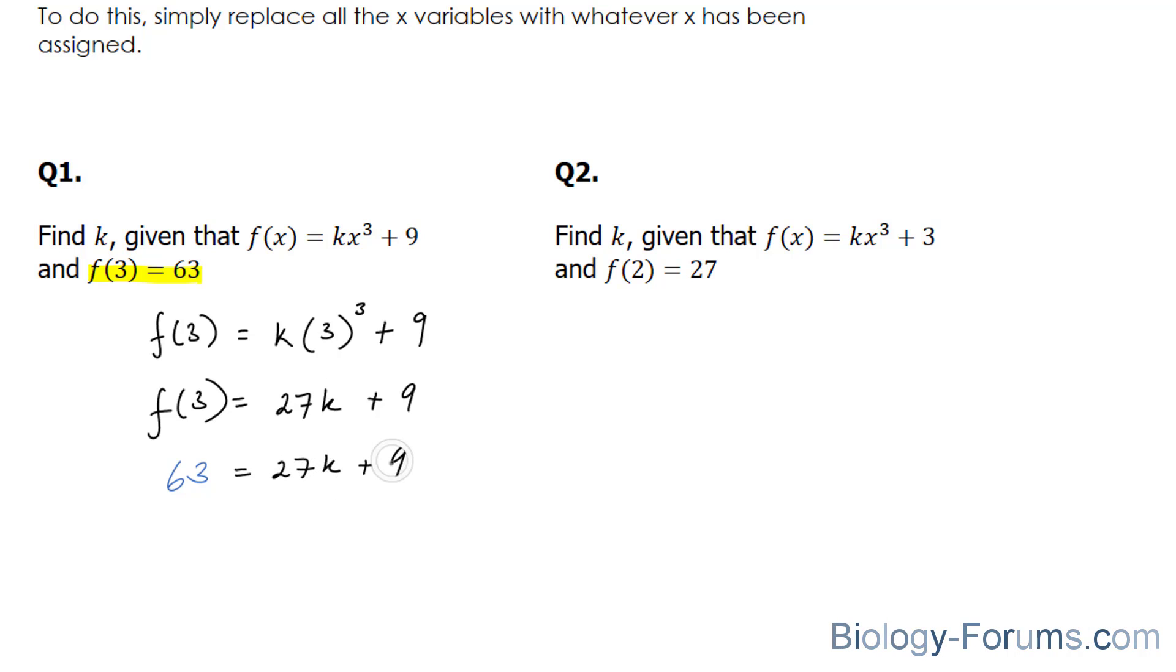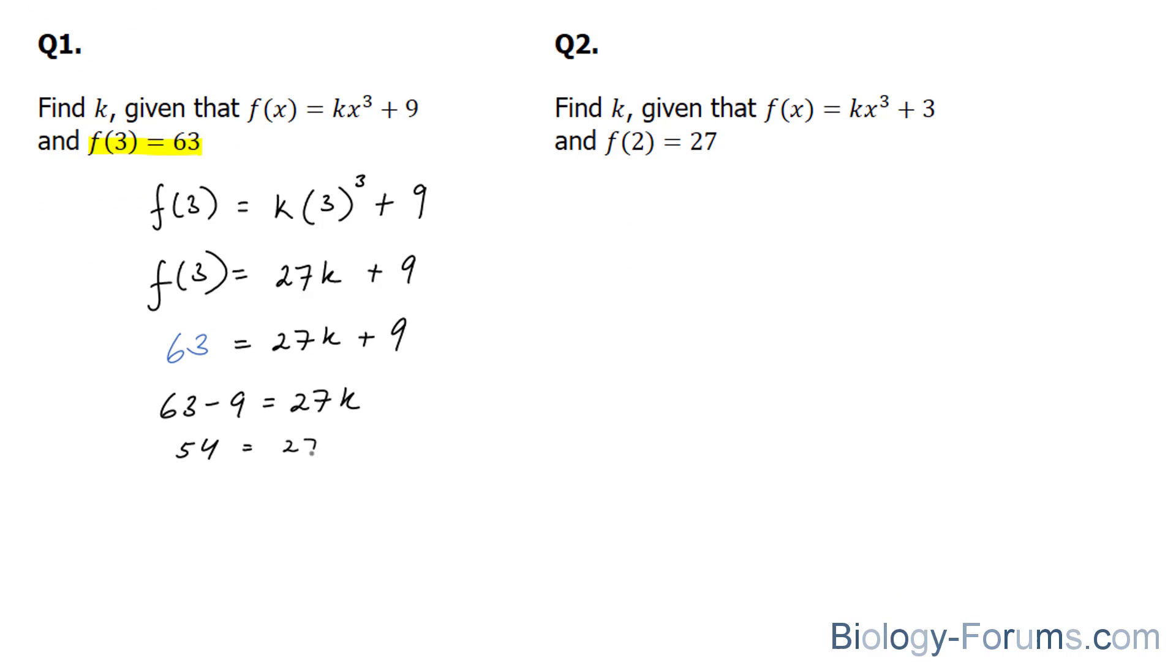And we solve for k by bringing this 9 over. And next, evaluating the left side, which gives us 54, and subsequently dividing both sides by 27, leaving us with our k value. 54 divided by 27 is equal to 2, and therefore, k is equal to 2.